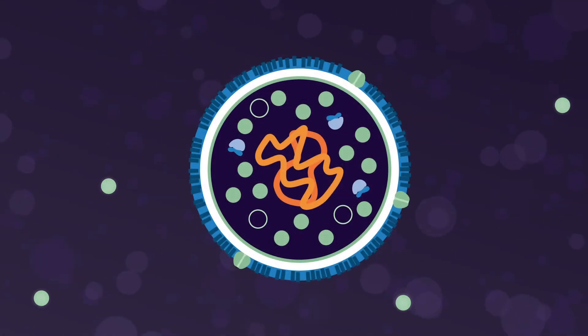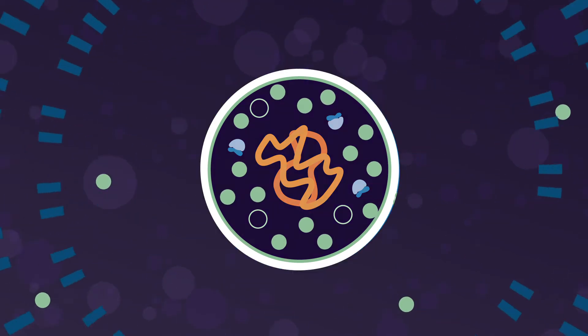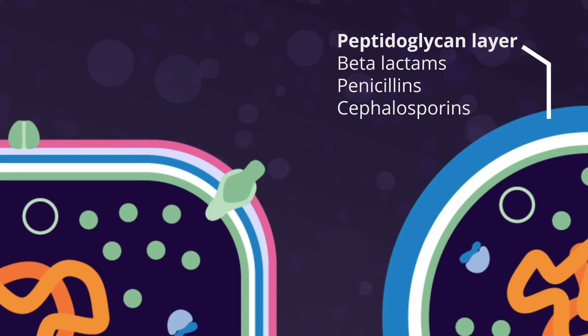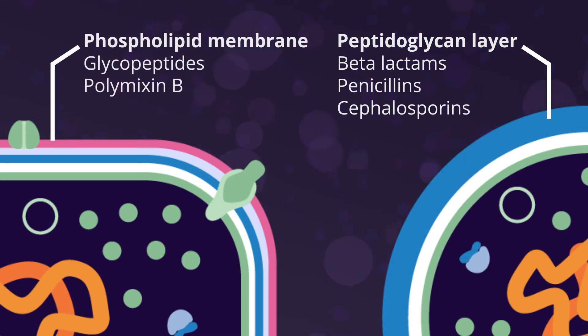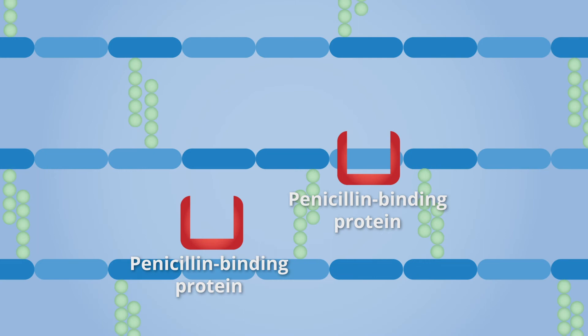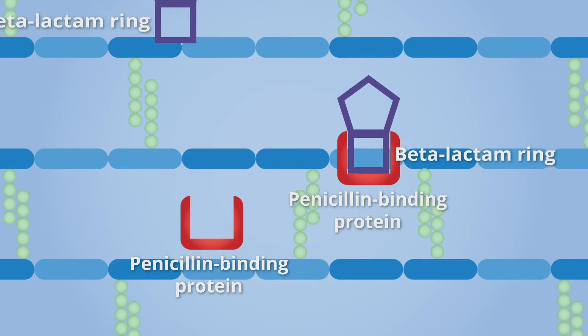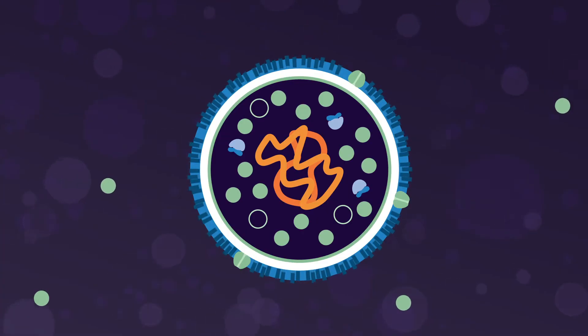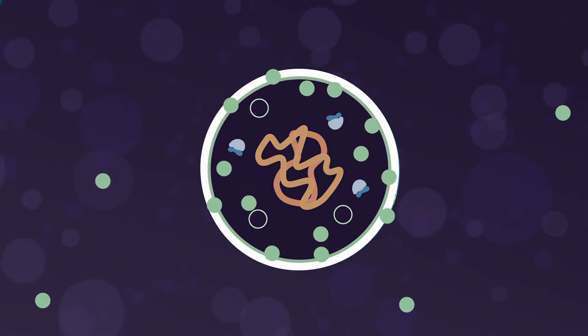Bacterial cells are hyperosmolar compared to host tissues, so without a secure cell wall, they quickly fill with fluid and rupture. Antibiotics that act on the cell wall target either the binding proteins within the peptidoglycan layer or the phospholipid membrane. Beta-lactams are some of the most commonly used antibiotics in both human and animal health. This group includes a number of different classes, including the penicillins and cephalosporins. They all share a beta-lactam ring, which binds to penicillin binding proteins within the peptidoglycan layer of the cell wall, destabilising the structural integrity of growing cells and causing bacterial death by lysis.